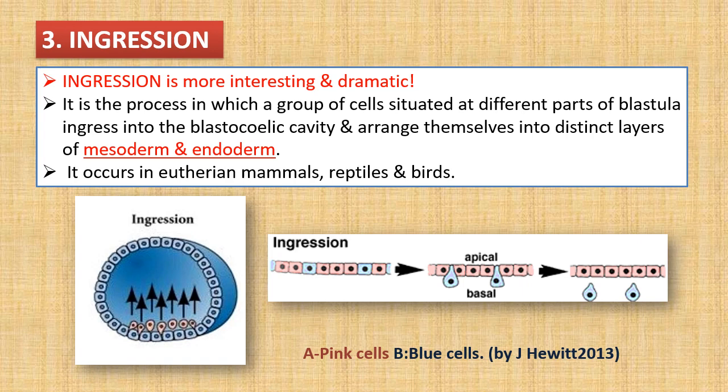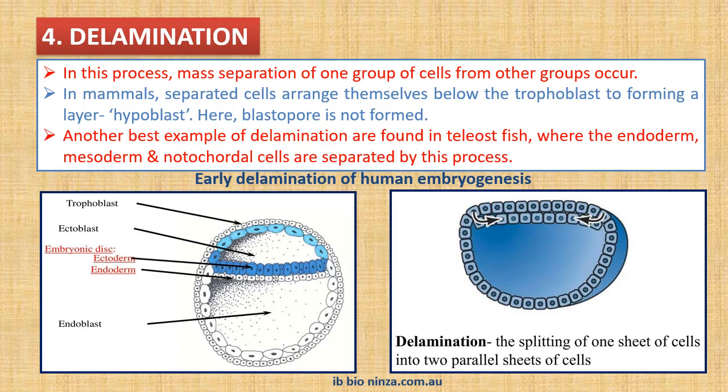Ingression is more interesting and dramatic. It is the process in which a group of cells situated at different parts of the blastula ingress into the blastocoelic cavity and arrange themselves into distinct layers of mesoderm and endoderm. It occurs in higher groups — mammals, reptiles, and birds. In figure A, pink-colored cells originally scattered here and there group together and enter the cavity. In figure B, blue-colored cells also scattered here and there group together and enter the cavity. This is ingression.